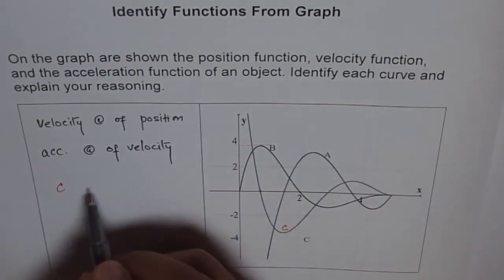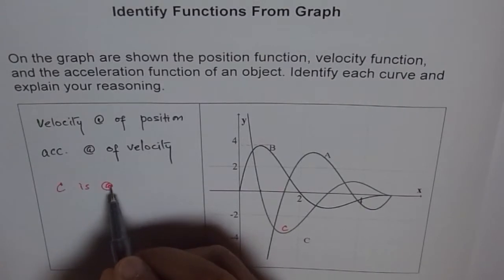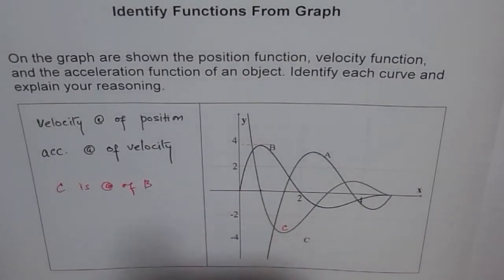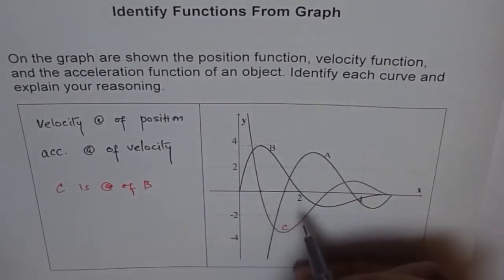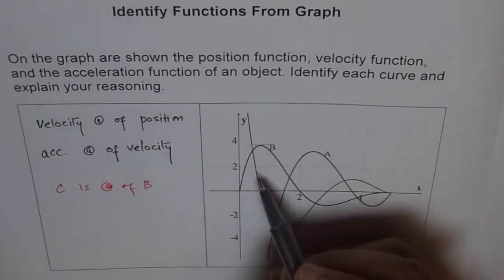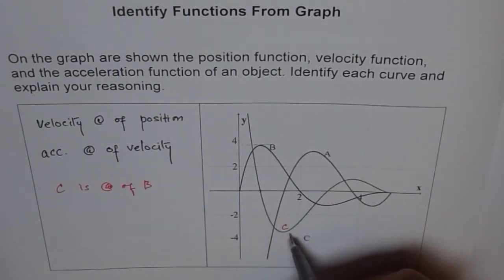So we say C is rate of change of B. So we got one relation here. This is our C. Now if you go to C, we have a rate of change here.